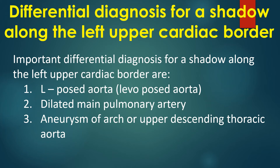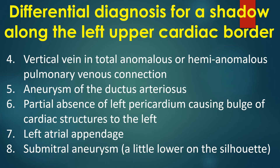Important differential diagnoses for a shadow along the left upper cardiac border are: 1. Levoposed aorta, 2. Dilated main pulmonary artery, 3. Aneurysm of arch or upper descending thoracic aorta, 4. Vertical vein in total anomalous or hemi-anomalous pulmonary venous connection, 5. Aneurysm of the ductus arteriosus, 6. Partial absence of left pericardium causing bulge of cardiac structures to the left, 7. Left atrial appendage, 8. Submitral aneurysm, a little lower on the silhouette.